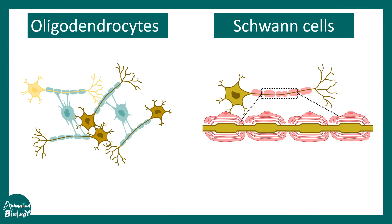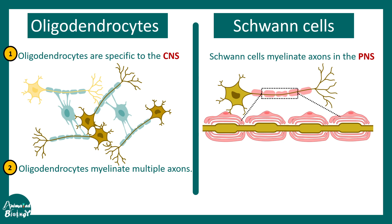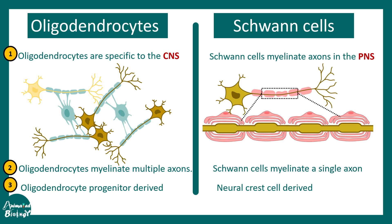To summarize: oligodendrocytes are found in the CNS while Schwann cells are found in the PNS. Oligodendrocytes myelinate multiple axons whereas Schwann cells myelinate only one. Oligodendrocytes are derived from neuronal progenitors whereas Schwann cells are derived from neural crest cells.